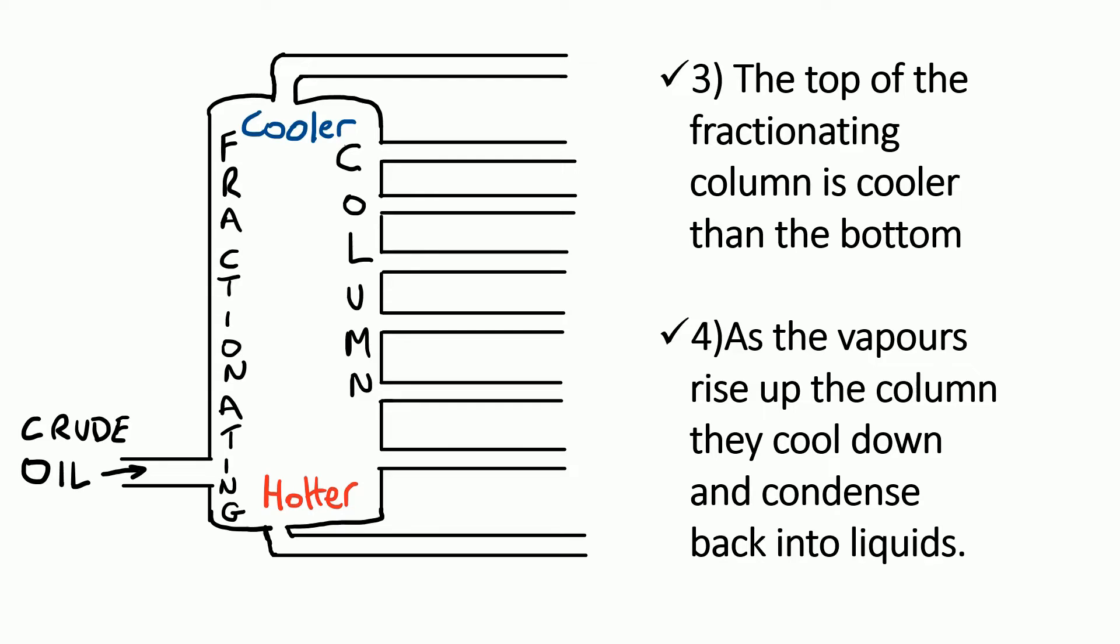So as the vapours rise up the column, they get cooler and cooler, and when they cool back down to their boiling point, they turn back from a gas into a liquid. In other words, the vapours start to condense.